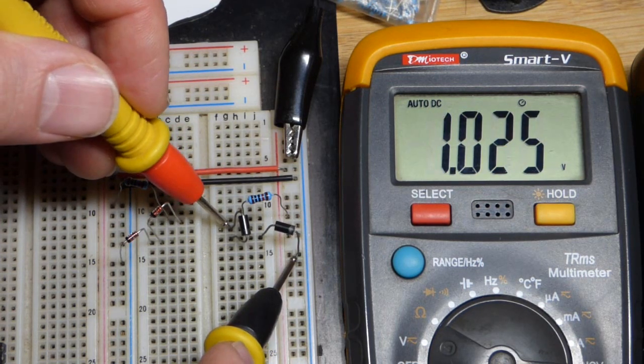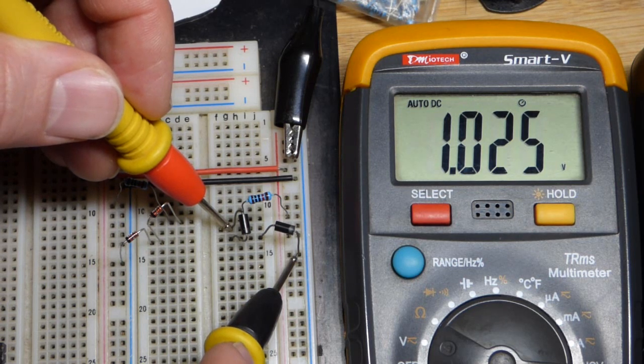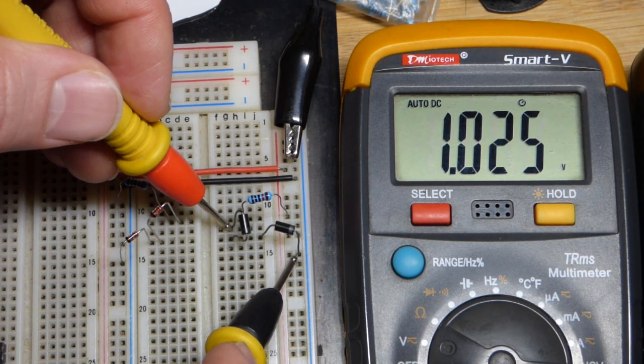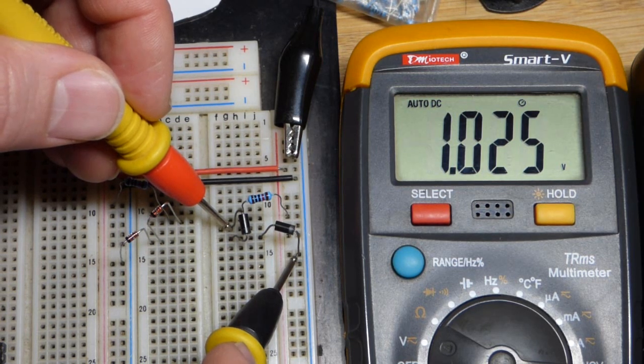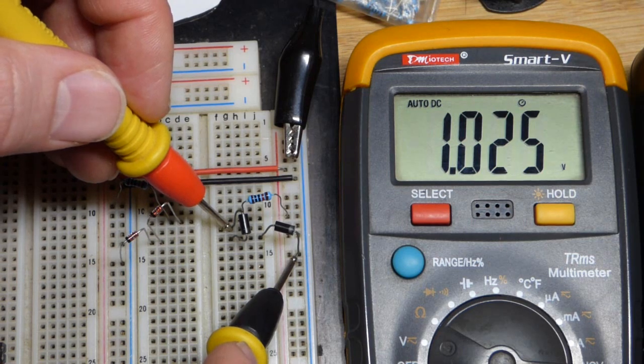We're going down to two volts. There you can see we got a little less current, actually not even half the current going through this now that I dropped the voltage so much.